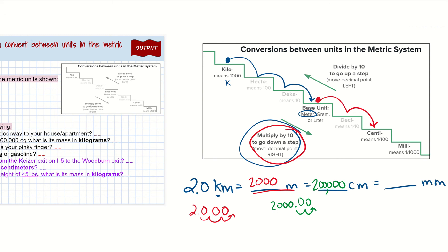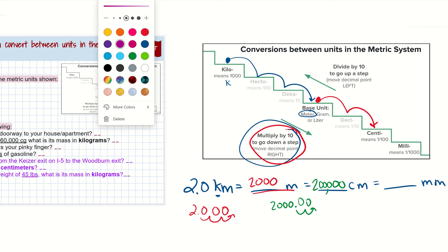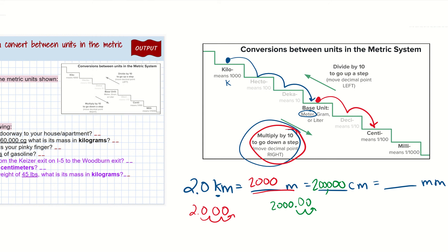We're not quite done — we still need to convert into millimeters. We're now in centi with 200,000 centimeters, and we want to convert to millimeters. Moving one more step down, I move the decimal place one more spot to the right, adding another zero, and I end up with 2,000,000 (2 million) millimeters. That's question one on your slide 25.